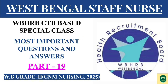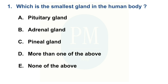The first question: Which is the smallest gland in the human body? Option A: Pituitary gland. Option B: Adrenal gland. Option C: Pineal gland. Option D: More than one of the above. Option E: None of the above. The correct option is Option C — Pineal gland.